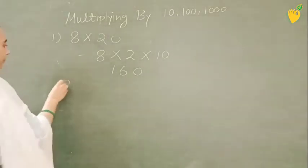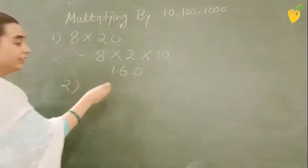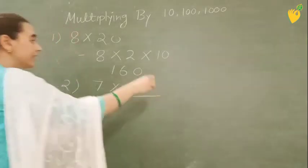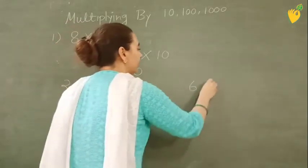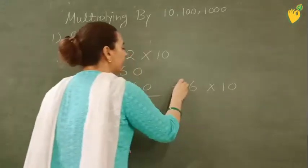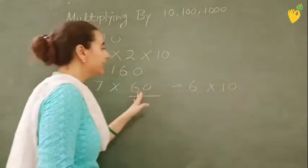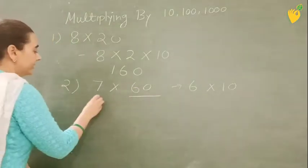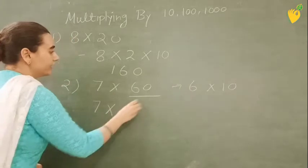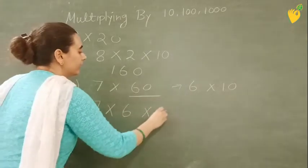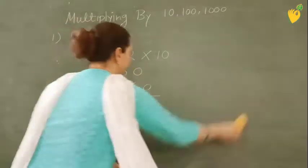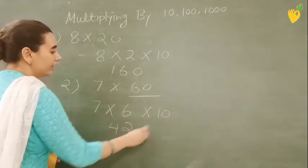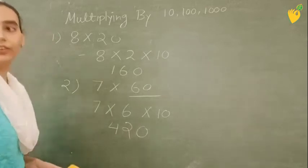Now question number 2, 7 multiplied by 60. Most people will write this 60 in 6 multiplied by 10, right? 6 tens are 60 only. So that is why I am writing here 7 and this 6 and this 10. Now 7 times 6 is 42 and this zero will add here.